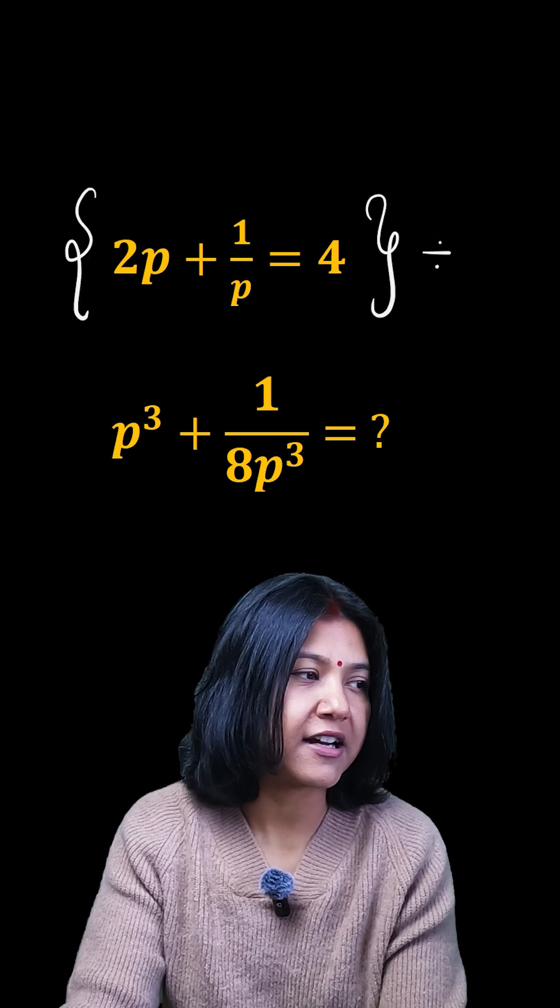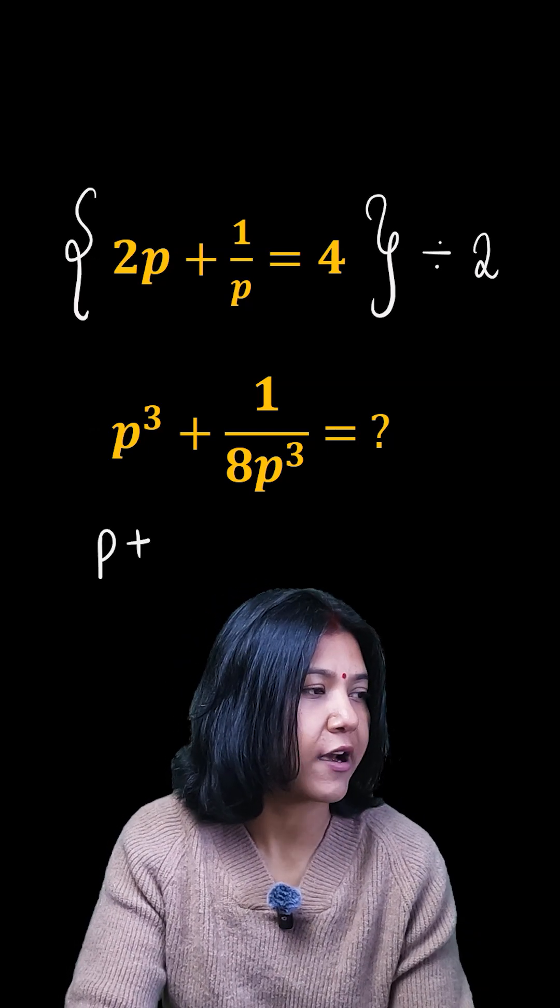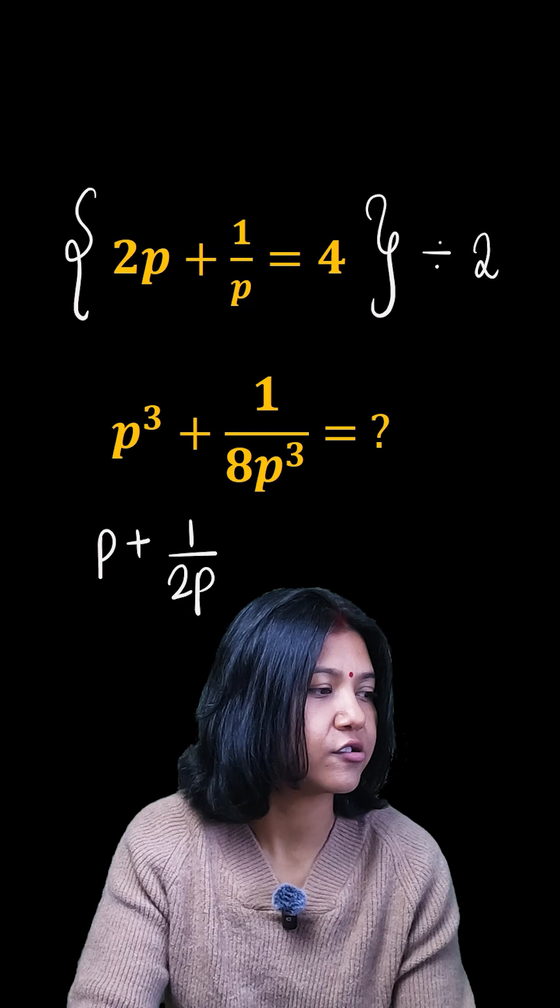I can do that only if I divide by 2. If I divide the whole equation by 2, it becomes p + 1/(2p) = 2.